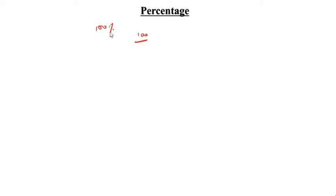Today we are going to learn about percentage. Percentage means per 100. So, how you will write it? 100 by 100 is equal to 100 percentage. So, 1 by 100 is equal to 1 percentage. So, x by 100 is equal to x percentage.